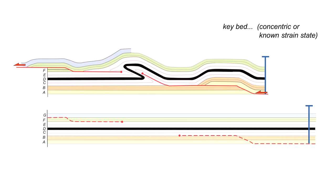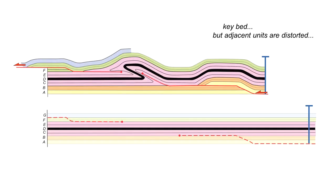So in this case we're going back to show layer D which deform concentrically and we can unravel that one so we know how long our cross-section should be. But the adjacent units layer C and layer E are distorted.